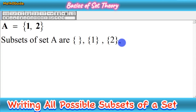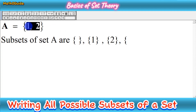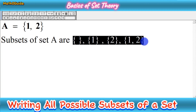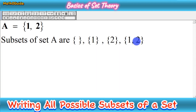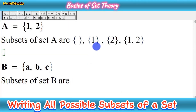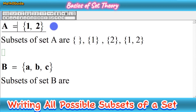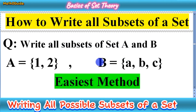Now we move to subsets with two elements. Since set A has only two elements total, there is only one such subset: {1, 2}. So set A has four subsets in total — the empty set, {1}, {2}, and {1, 2}, which is the improper subset. This is the basic method to write all subsets of a given set.